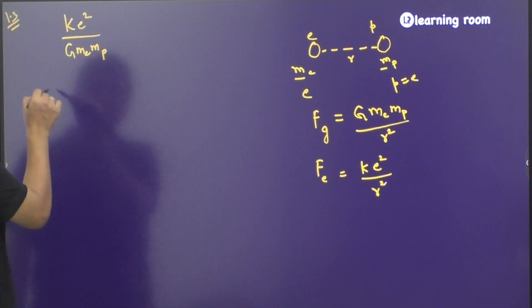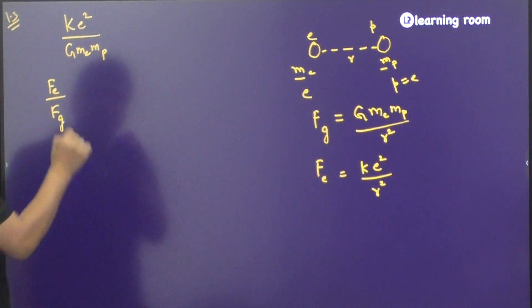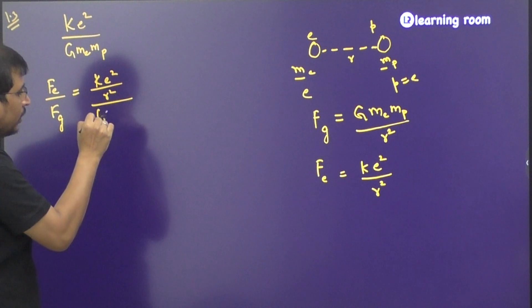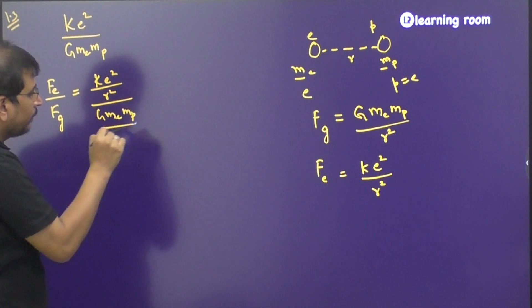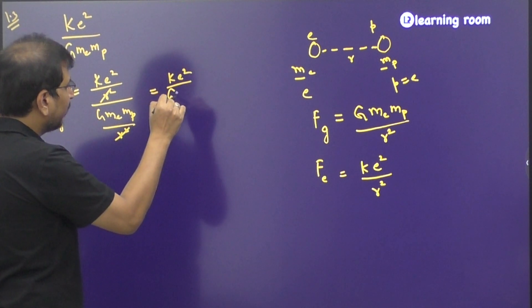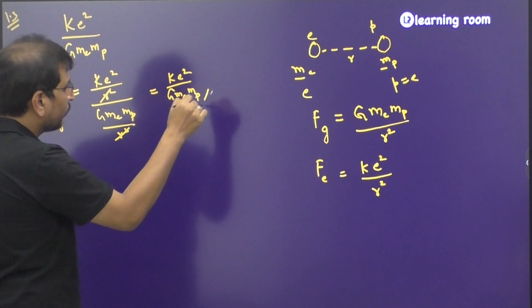So if you divide both, you get Fe divided by Fg which is going to be ke² divided by r² by G me mp divided by r². r² r² get cancelled, it is ke² divided by G me into mp.